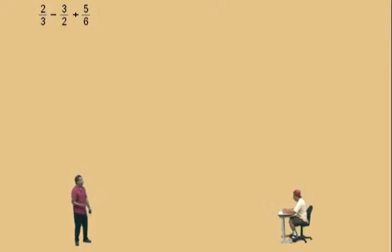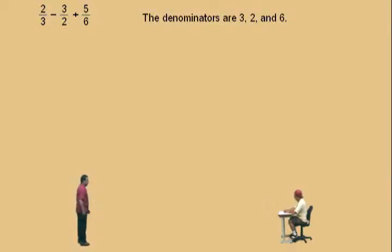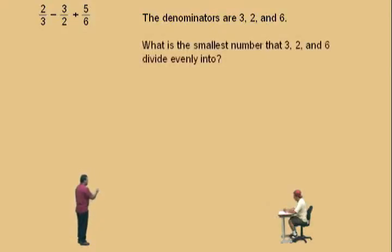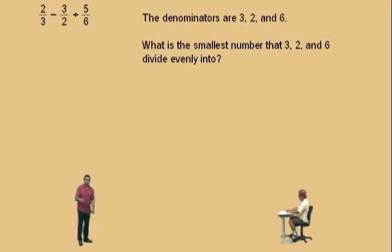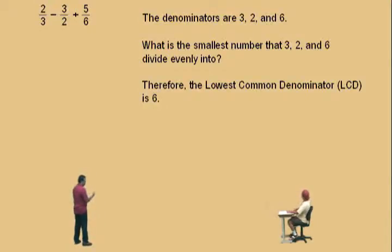Once we find the lowest common denominator, we're going to make all of our fractions have that denominator, and then we'll do our addition and subtraction. Charlie, what are our denominators? Three, two, and six. What is the smallest number that three, two, and six divide evenly into? Twelve? Twelve is a common denominator, but it's not the lowest — all those numbers divide evenly into twelve, but there is a smaller number. It's actually six. Six is the lowest common denominator, because all those numbers divide evenly into six. LCD is the abbreviation for lowest common denominator.